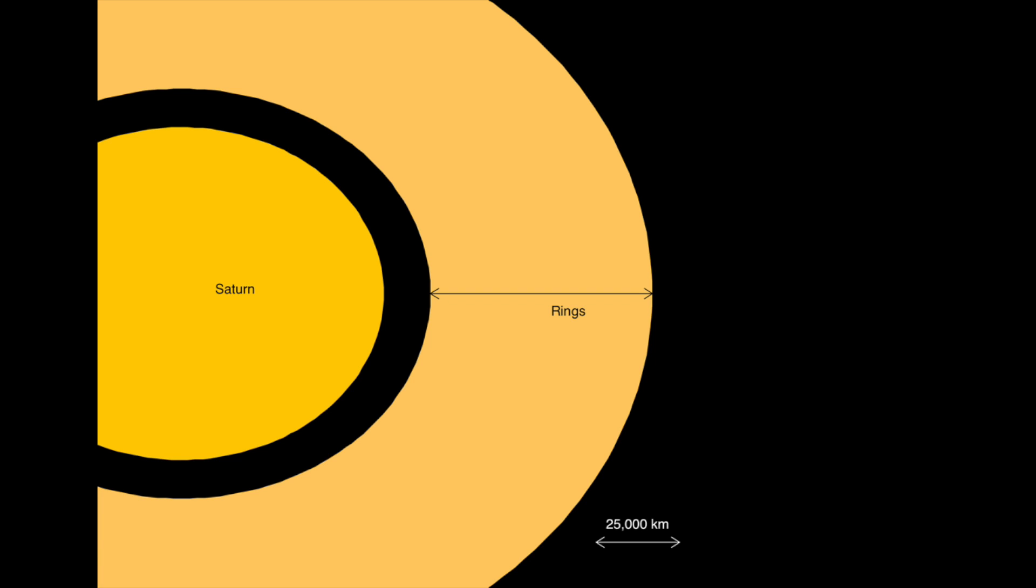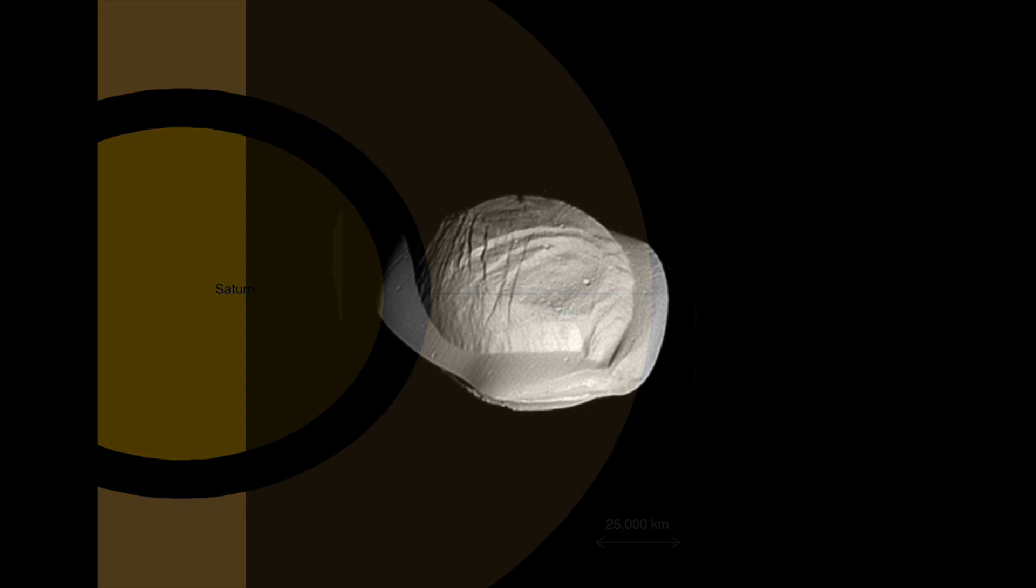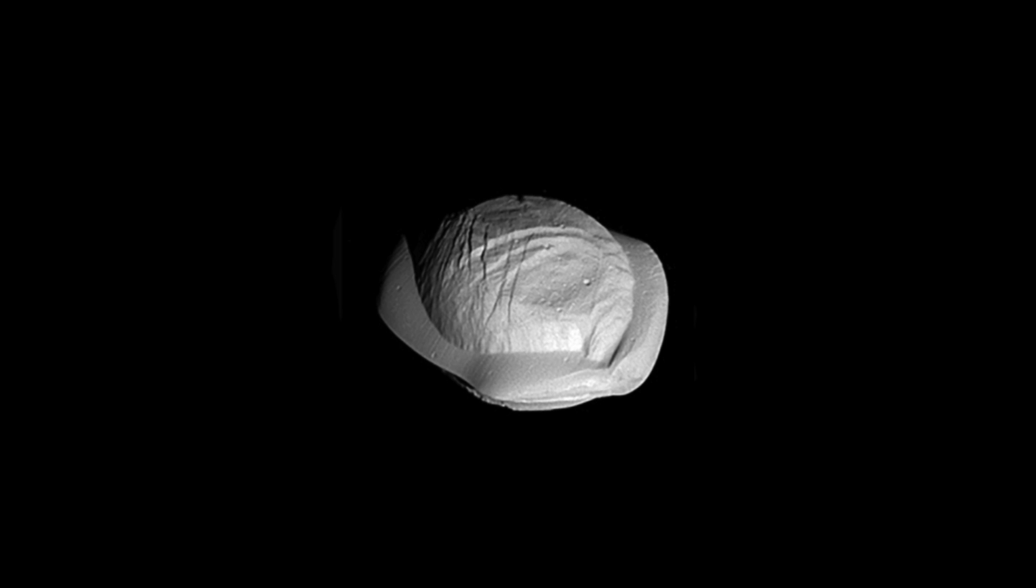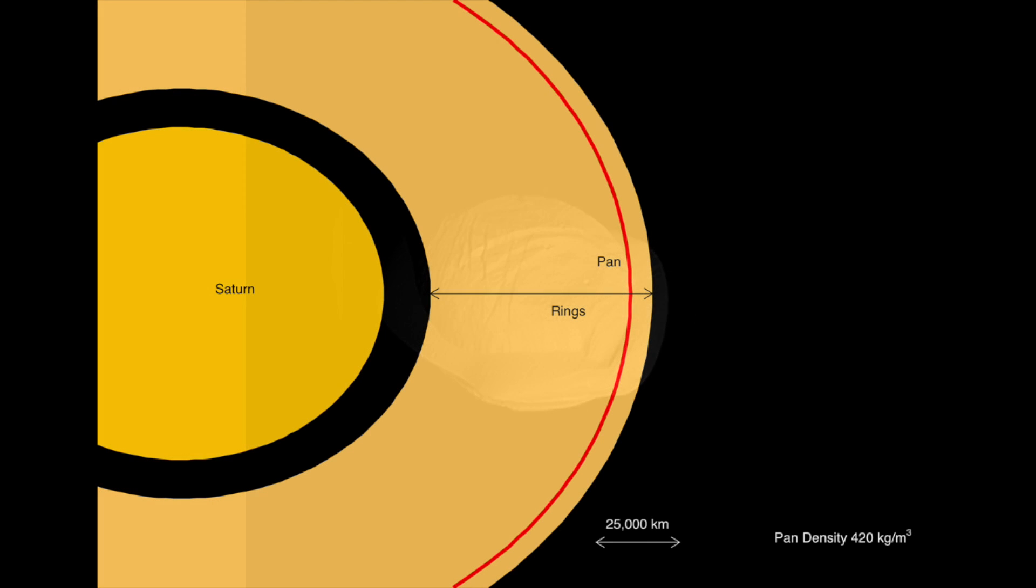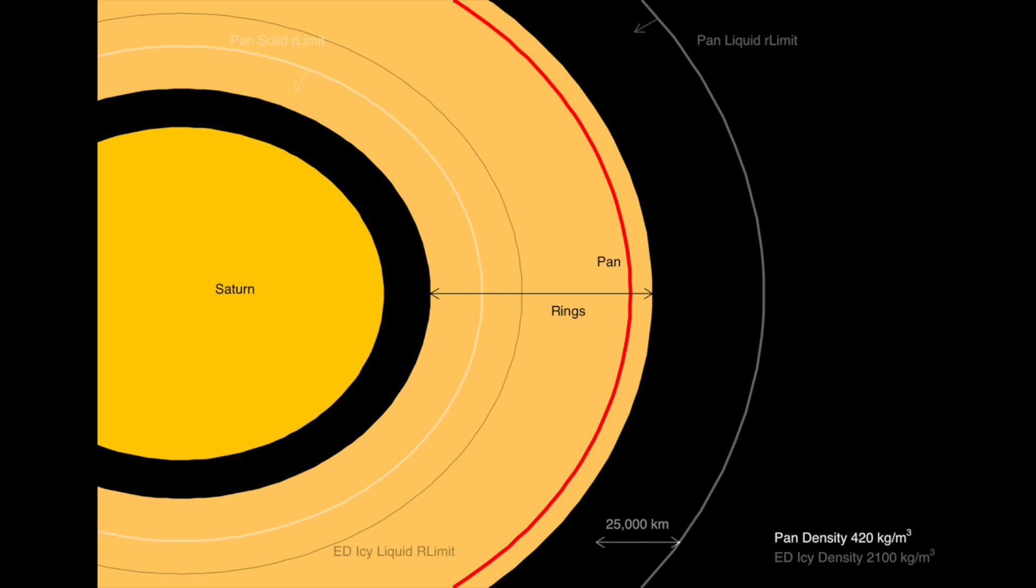So, first, let's look at a real object, Pan. This object orbits here. Its radius and density are quite low. Lower than the average ice world in Elite. If we run the numbers for the density of Pan, we can draw the solid and liquid limits for this object. And we see that Pan is firmly inside the liquid Roche limit, but outside the solid. This shows that for small, low-density objects, they may form inside the liquid limit, although are likely prevented from growing too large, and undergo a good amount of thermal heating from tidal stress.